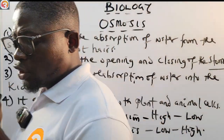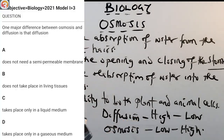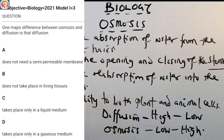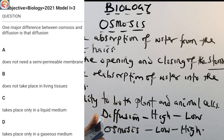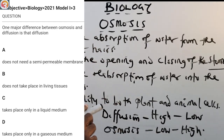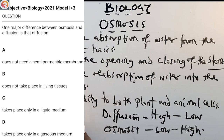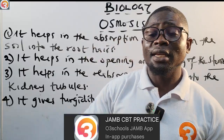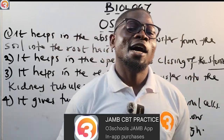2021 question number 3: one major difference between osmosis and diffusion is that A, diffusion does not need a semi-permeable membrane; B, does not take place in living tissues; C, takes place only in a liquid medium; D, takes place only in a gaseous medium. The answer is A — diffusion does not need a semi-permeable membrane, but osmosis requires one as stated clearly in its definition. There are thousands more questions on the app. Download and start practicing today. My name remains Master T — see you in the next episode.